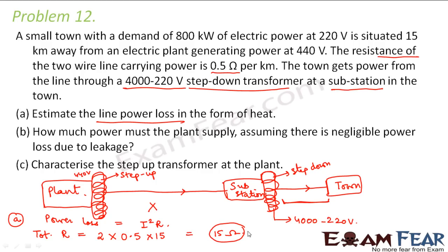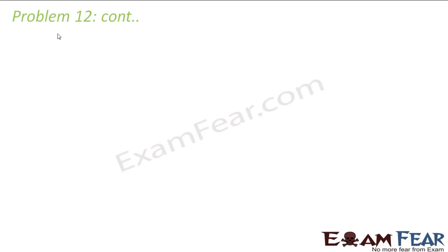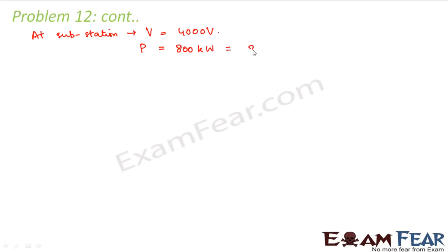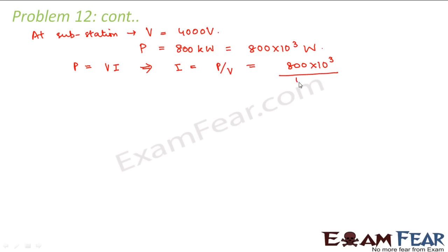Now we have to calculate the current. At the substation, the voltage entering the step-down transformer is 4000 volts, and the power delivered to the town is 800 kilowatts — equal to 800 × 10³ watts. Since power equals V × I, the current equals power divided by voltage: 800 × 10³ divided by 4000, which comes out to be 200 amperes. This is the amount of current flowing through the wire.